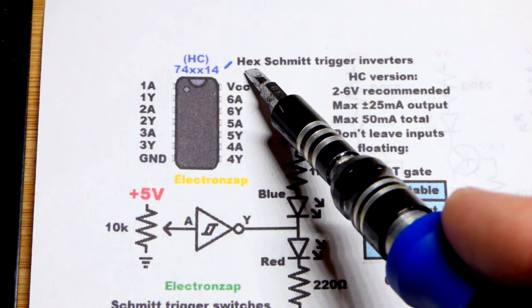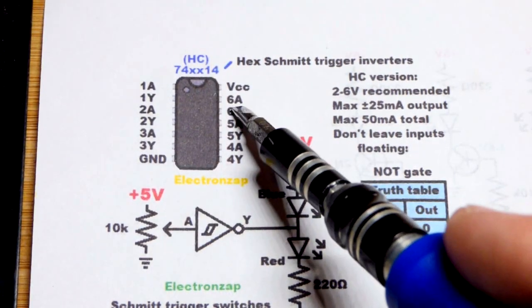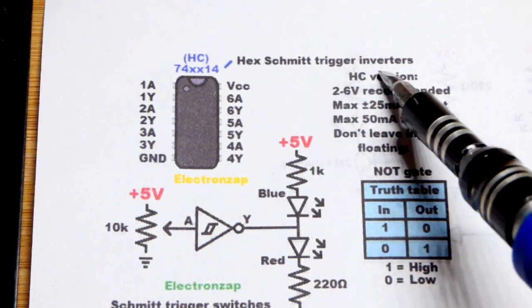So if you're using all 6 of them you'd want to lower the current. But in any case the 7414 is a hex, there's 6 of them: 1, 2, 3, 4, 5, 6 right there. Schmitt trigger inverters.